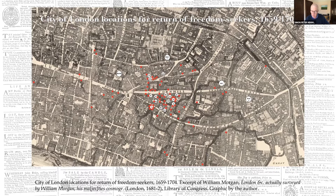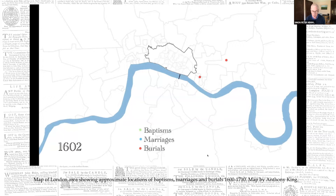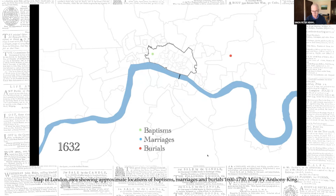We know that the young freedom seeker was free for at least five days — it's possible he escaped permanently, we just don't know. This map shows the baptisms, marriages, and burials of people of color in London as revealed in parish records in which race was recorded. It shows that London was more racially diverse than we sometimes appreciate, with developing Black communities spread all over the city. While freedom seekers tended to run away from concentrations in the City of London, the East End, and the South Bank, the Black community as a whole — many of these people free — was spread far more broadly across the city.